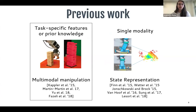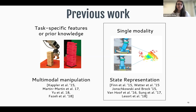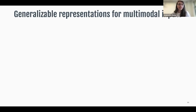We see the value of multimodality in many previous works on robotic manipulation. However, most do not learn policies directly from high-dimensional multimodal inputs — they either need handcrafted features or prior knowledge, making them task-specific. Some works learn state representations from RGB images and tactile sensors, showing good representations improve policy learning, but most learn from single modalities.